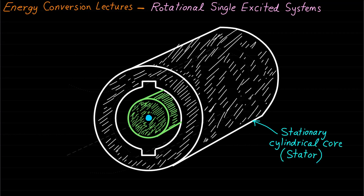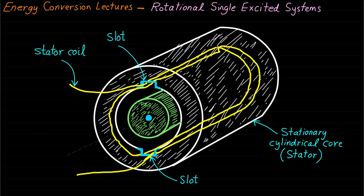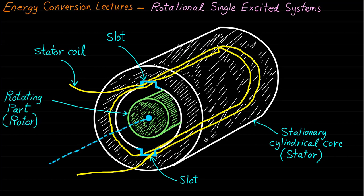This machine has a single excitation coil going through two slots through the stator, called the stator coil. In this example, the stator coil has two turns. The rotating part is called the rotor and it can rotate around this center axis.